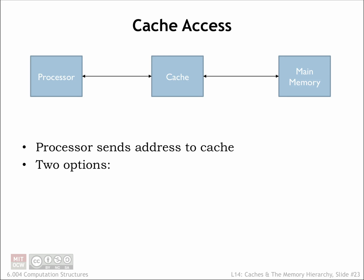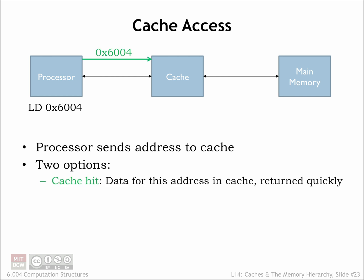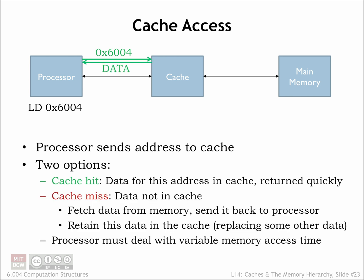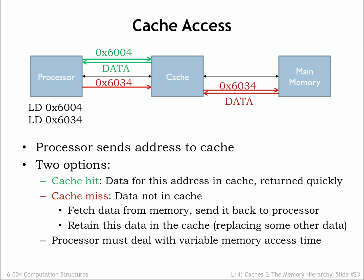Let's review our plan. The processor starts an access by sending an address to the cache. If the data for the requested address is held in the cache, it's quickly returned to the CPU. If the data we request is not in the cache, we have a cache miss, so the cache has to make a request to main memory to get the data, which it then returns to the processor. Typically the cache will remember the newly-fetched data, possibly replacing some older data in the cache.